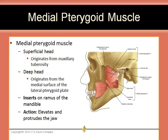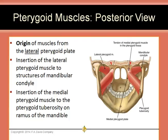The medial pterygoid muscle is made up of a superficial and a deep head. The superficial head originates from the maxillary tuberosity, and the deep head originates from the medial surface of the lateral pterygoid plate. It inserts on the ramus of the mandible, and its action is to elevate and protrude the jaw. Both pterygoid muscles originate from the lateral pterygoid plate — the lateral pterygoid from its lateral surface and the medial pterygoid from its medial surface. The muscles were named for their origins from the surfaces of the lateral pterygoid plate.